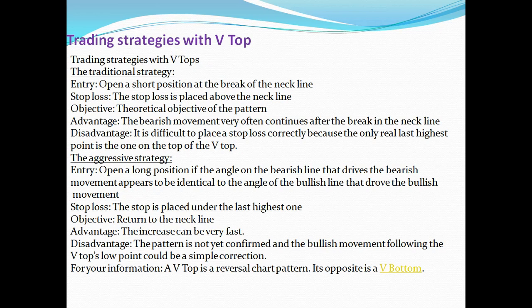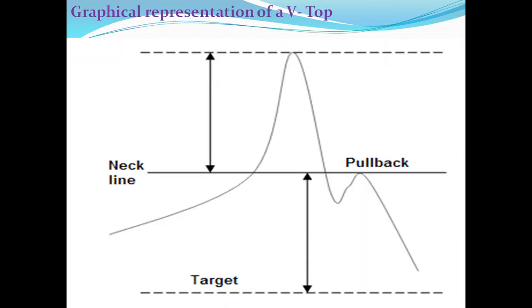Trading strategy with V top — Entry: open a short position at the break of the neckline. Stop loss: the stop loss is placed above the neckline. The objective is the theoretical objective of the pattern. Advantage: the bearish movement very often continues after the break of the neckline. Disadvantage: it is difficult to place the stop loss correctly because the only real last highest point is the one on top of the V top. You can put the stop loss above the bearish candle.